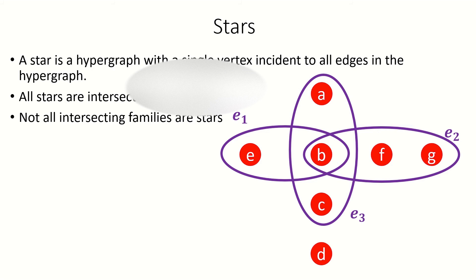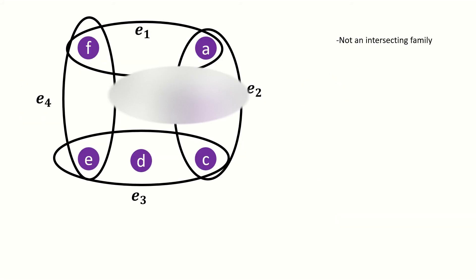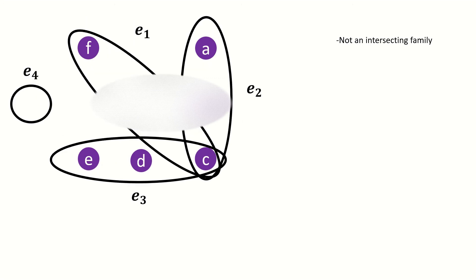However, not all intersecting families are stars. The hypergraph shown here is an intersecting family that is not a star. Also, intersecting families cannot have an empty edge, as that edge would not have a non-empty intersection with any other edge.